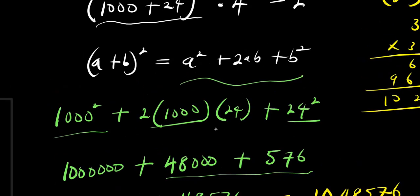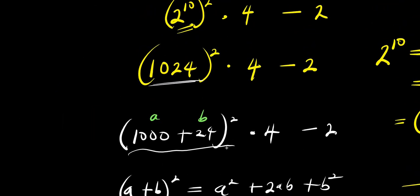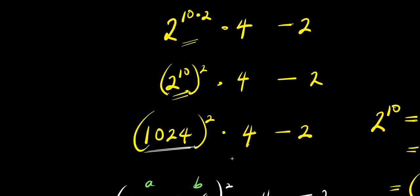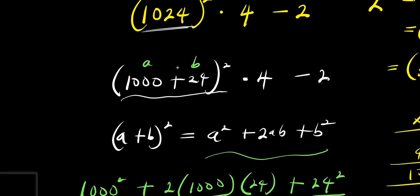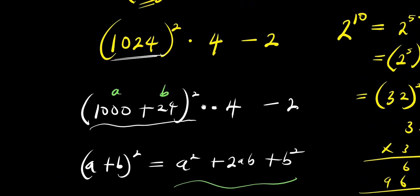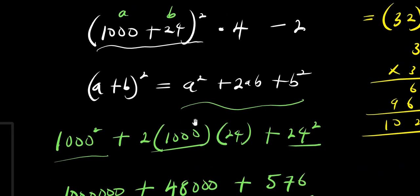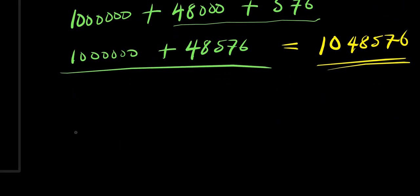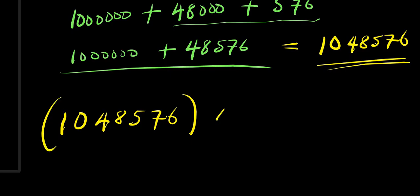This is the value for 2 to the power of 20 — also the value of 1024 to the power of 2, which means 2 to the power of 10, raised to the power of 2, and that is 2 to the power of 20. So what we are going to do next is multiply that by 4, then subtract 2 from it, and that will be our final answer. We have 1,048,576 times 4, minus 2.